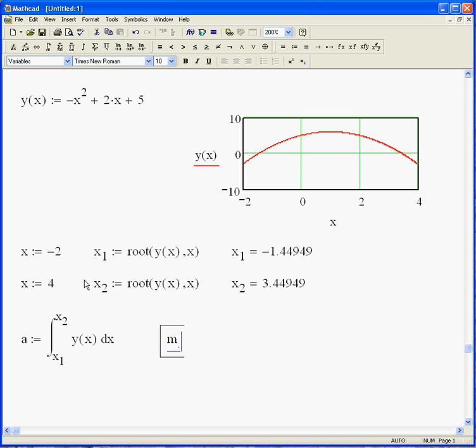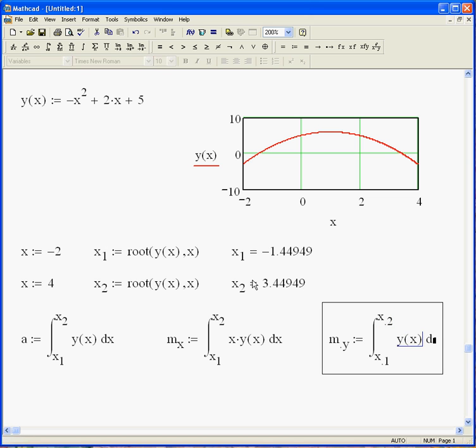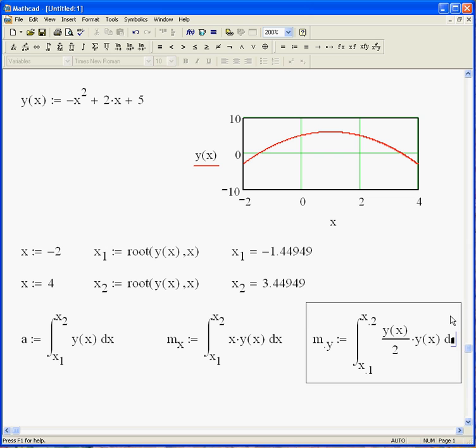Now, let's find the moment in the x direction, and do the same integral we did before. x1 to x2 distance times an area. And moment in the y direction, the integral of x1 to x2 of the distance, which now is y of x over 2, distance to the center of that box, times the area, y of x dx.